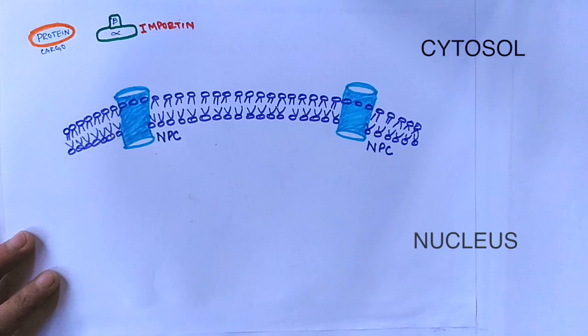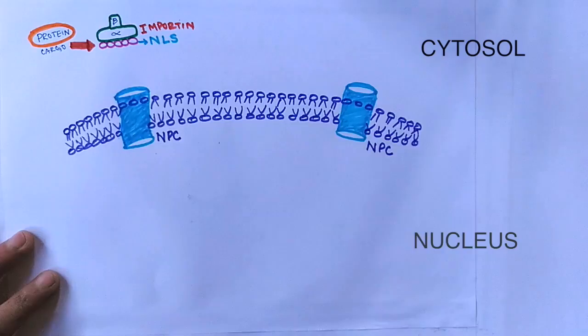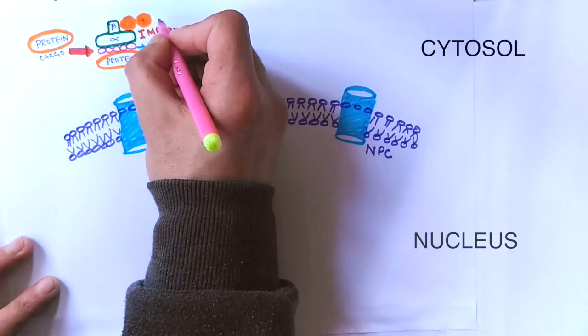Importin has got two domains: alpha and beta domain. The alpha domain binds to NLS, that's nuclear localization signal, and this NLS will carry the cargo or the protein into the nucleus. This NLS tags for a specific protein.